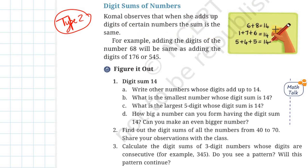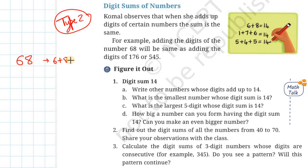We are trying to get the digit sum of 14. For example, I have the number 68. Let us add the digits of this number 68. You will get 6 plus 8, which is equal to 14.